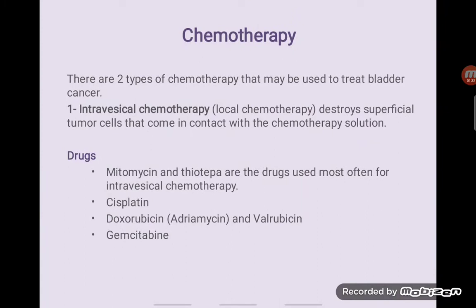How can we treat bladder cancer? There are two types of chemotherapy that may be used: local chemotherapy or systemic chemotherapy. Starting first with local chemotherapy, the most commonly used drugs are mitomycin, thiotepa, cisplatin, doxorubicin, and gemcitabine.